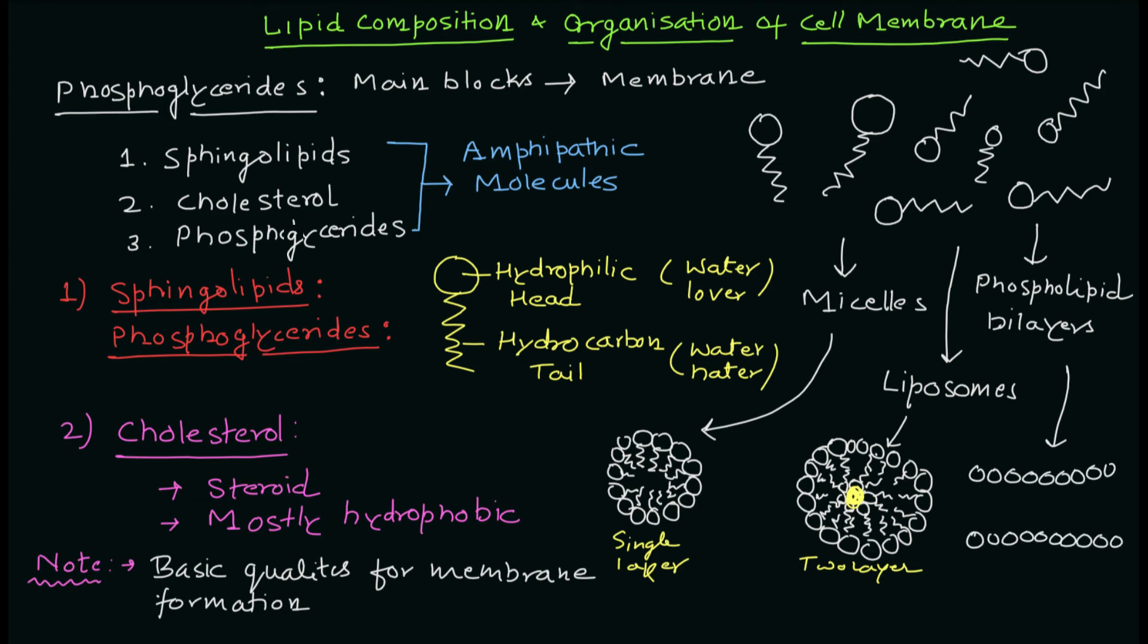And phospholipid bilayer is basically the layering of these structures. For example you have one phospholipid molecule, they are literally arranged and forming one layer, then you have another layer of these molecules.